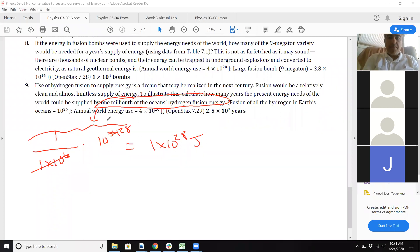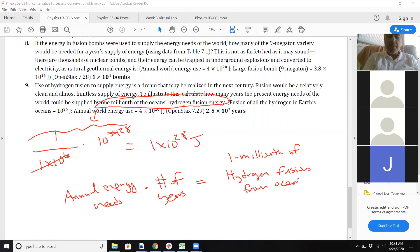Now remember, the annual usage is 4×10²⁰. So if you take annual energy needs times the number of years, that's going to equal one millionth of hydrogen fusion from oceans. So it's kind of a verbal model. That's 1×10²⁸, that's 4×10²⁰, and again we'll call it X number of years. Solve for X.